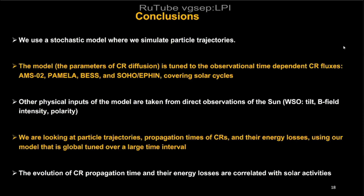In conclusion, we used a stochastic model to simulate particle trajectories as a function of time, with the cosmic ray diffusion coefficient tuned to time-dependent observed fluxes from AMS, PAMELA, and BESS to cover more solar cycles. Other physical inputs came from solar observatories. We studied particle trajectories, propagation times, and energy losses using our model globally tuned over a larger time interval. Finally, the evolution of cosmic ray propagation time and energy losses are correlated with solar activity.